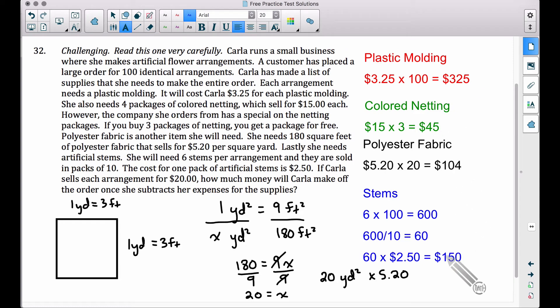So these are all of the expenses that Carla's going to have. The plastic molding, the colored netting, the polyester fabric, and the stems. She's going to sell each arrangement for $20. And we want to figure out how much money Carla will make off of the order once she subtracts her expenses for the supplies. Basically, you can think of this as what type of profit is she getting.